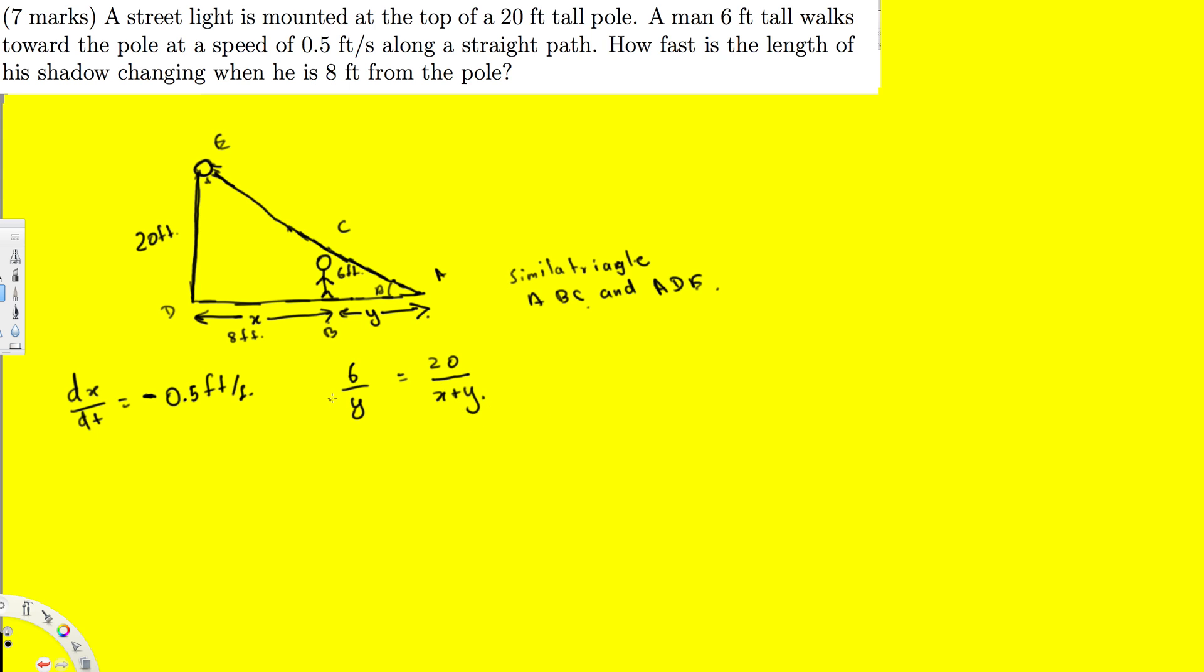And now what I can do is I can cross multiply each of this. So this is going to be six x plus six y. And the other side, we are going to have 20 y. Therefore, if I solve for y, if I expand this one, six x plus six y is equal to 20 y. And if I bring the y to the other side, this will become no, 14 y. 14 y is equal to six x.